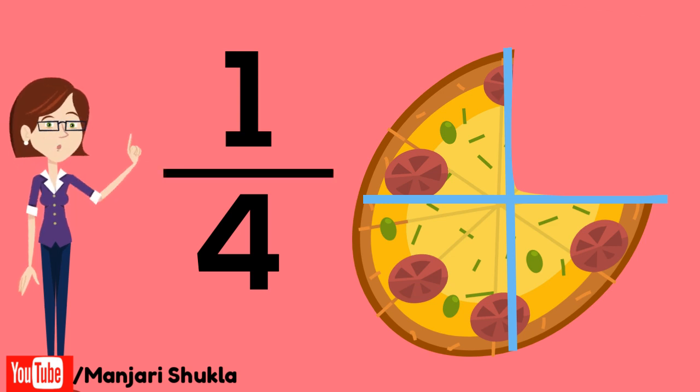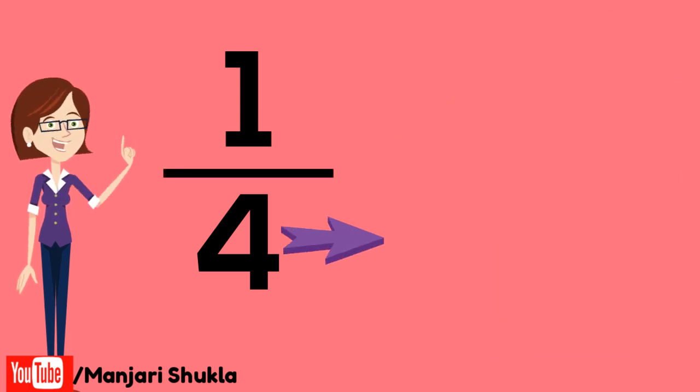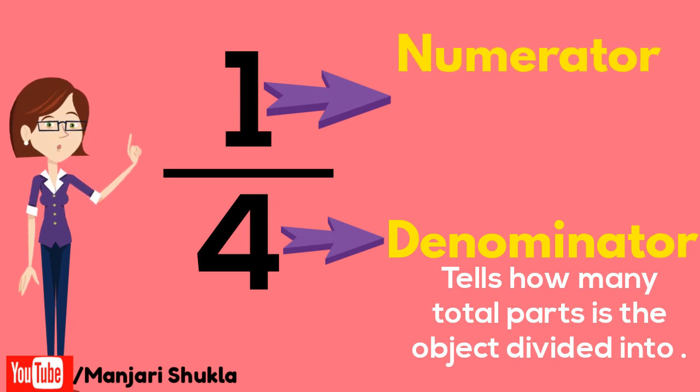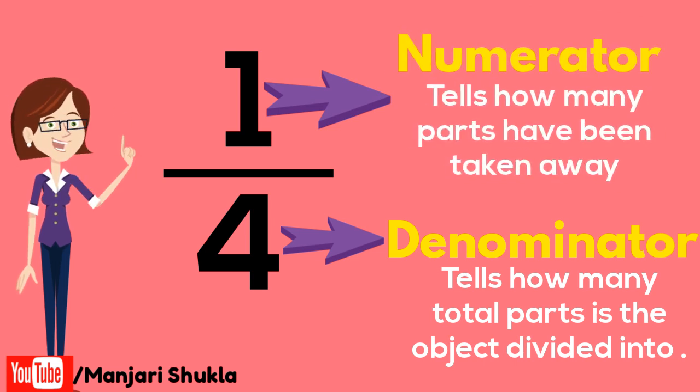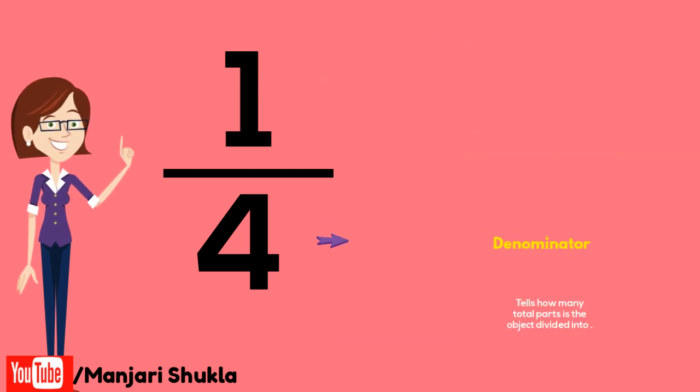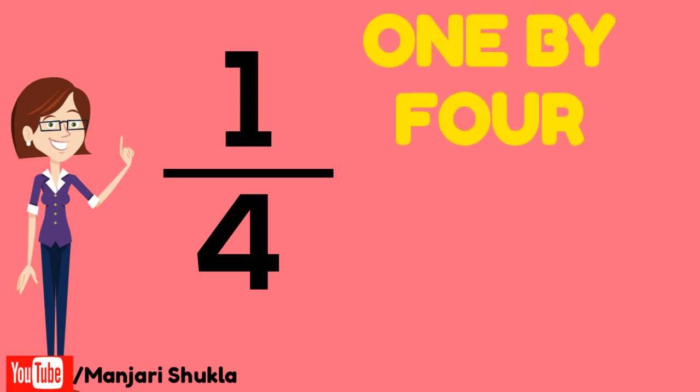Now let's know what these two numbers are called. The below number is called the denominator. A denominator tells us how many total parts the object is divided into. The number on the top is known as the numerator. A numerator tells us how many parts have been taken away. When we combine the numerator and the denominator, a fraction is formed. This fraction is called 1 by 4 or we can call it 1 fourth.